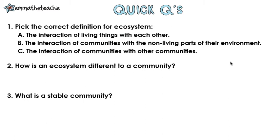Number one, pick the correct definition for ecosystem. Make sure that you read them all carefully and try to spot the differences between them. Hopefully you spotted that the non-living parts only appears in option B. So this is our definition for ecosystem: the interaction of communities with the non-living parts of their environment.